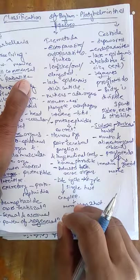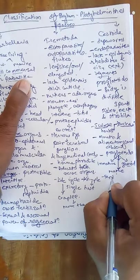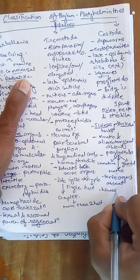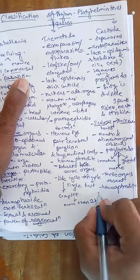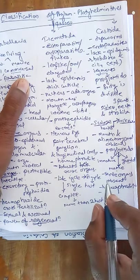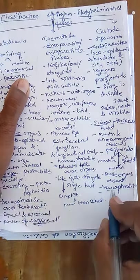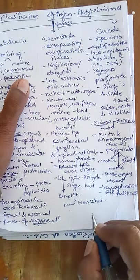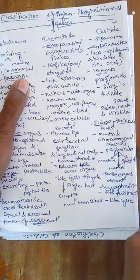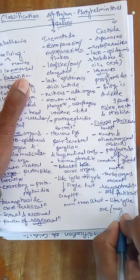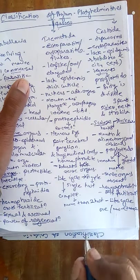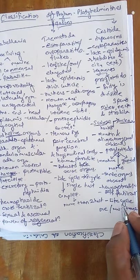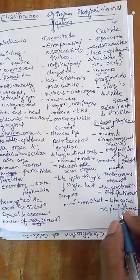Sense organs are absent. Most animals are hermaphrodite, with male and female reproductive systems present in the same individual, and self-fertilization occurs. The life cycle is completed in either a single host or more than two hosts. Examples include the tapeworm (Taenia solium) and the dog tapeworm (Echinococcus granulosus).